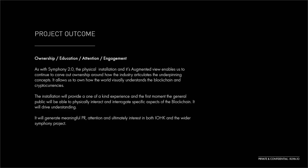There are four key project outcome areas: ownership, education, attention and engagement. As with Symphony 2.0, the physical installation and its augmented view enables us to carve out ownership around how the industry articulates the underpinning concepts — to own how the world visually understands the blockchain and cryptocurrencies. The installation will provide a one-of-a-kind experience and the first moment the general public will be able to physically interact and interrogate specific aspects of the blockchain. Lastly, it will generate meaningful PR attention and ultimately interest in both IOHK and the wider Symphony project.